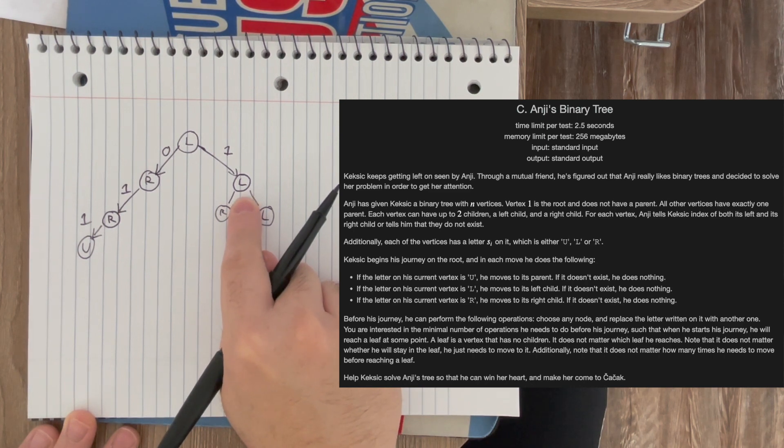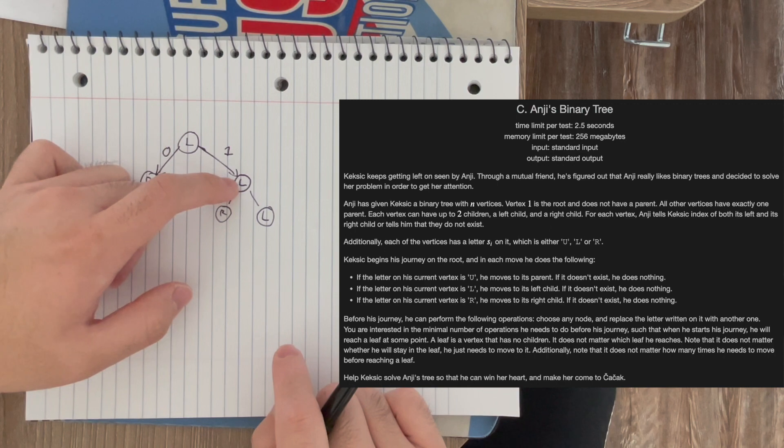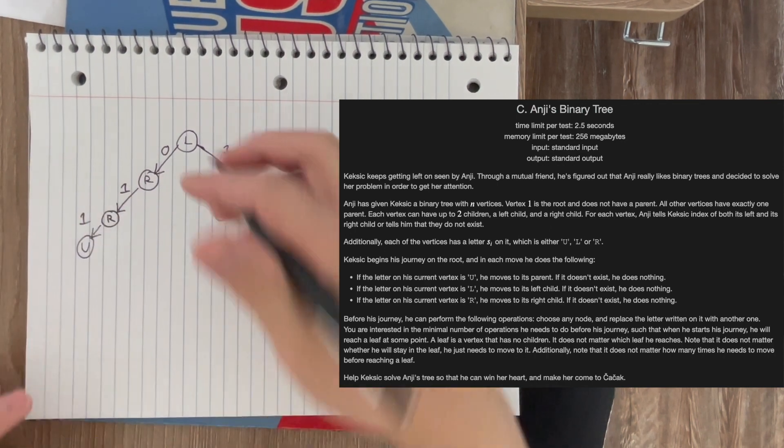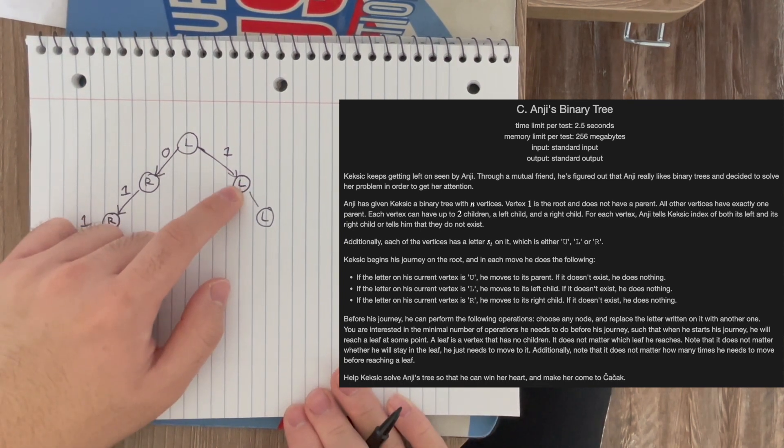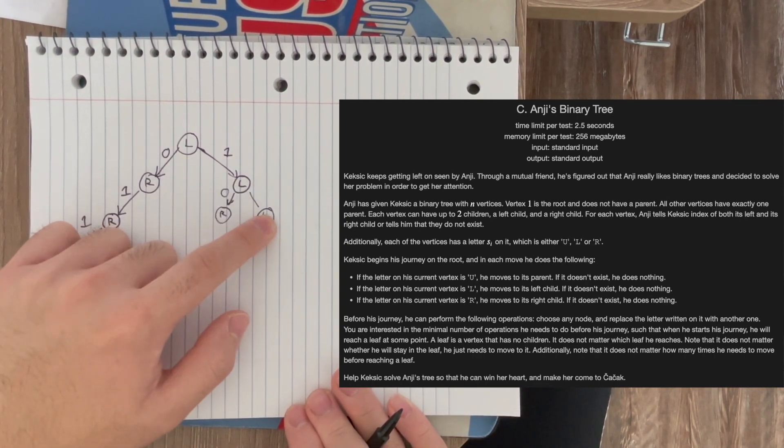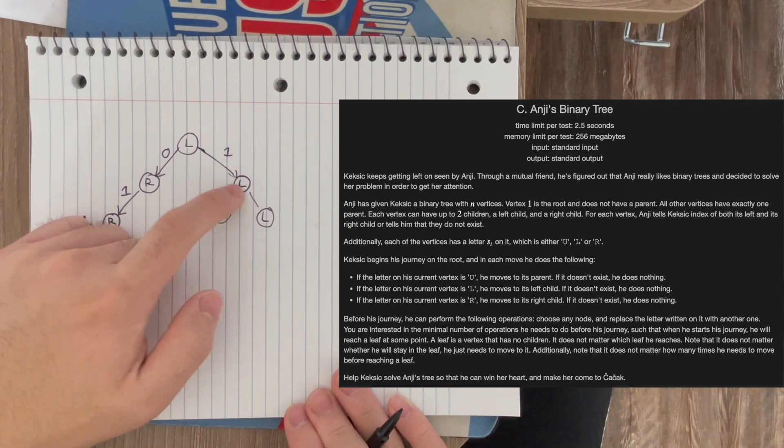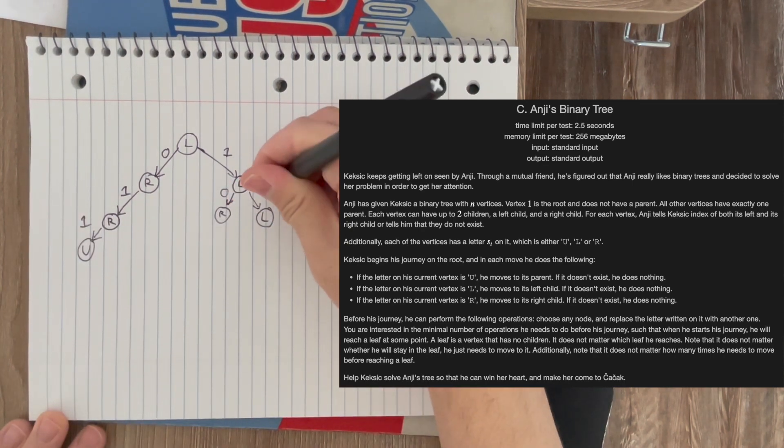And then for this node over here, its default label is L, so that means we can go to the left subtree for free, so we draw an edge with weight 0. And then if we were to go to the right subtree, we would have to change this label to R, so we draw an edge of weight 1.